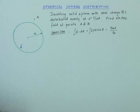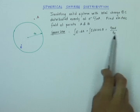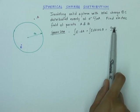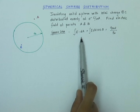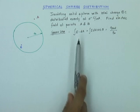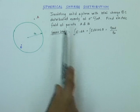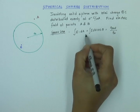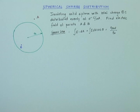Now, how can I use Gauss's law to find the electric field at any point, say point A? If I have some Gaussian surface that passes through point A, and if I know the charge enclosed by that Gaussian surface, and if I can evaluate the surface integral, then by solving it I can find out the electric field at point A. Solving the surface integral is not easy for any arbitrary surface.